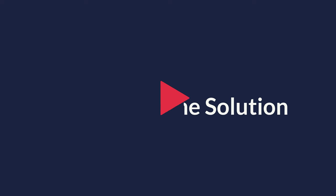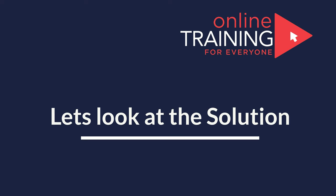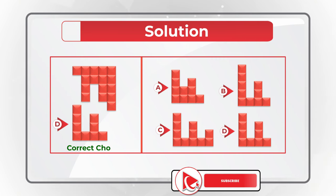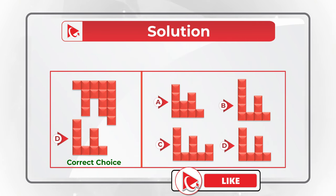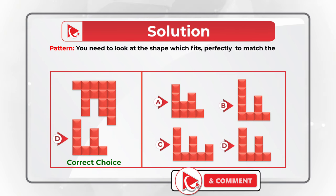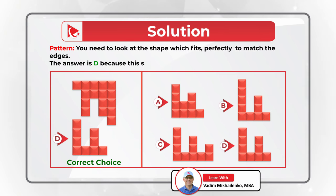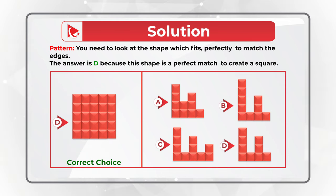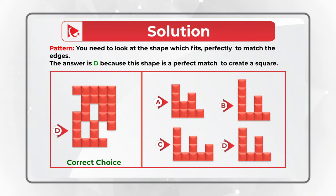I am moving forward to share with you the correct solution. As you might have figured out, the correct choice here is choice D. To get to this answer, you need to look at the shape which fits perfectly to match the edges. Since this is the 5x5 square, choice D is the perfect shape because it matches perfectly to create a full square. Hopefully you have nailed this question and now know how to answer similar problems on the test.